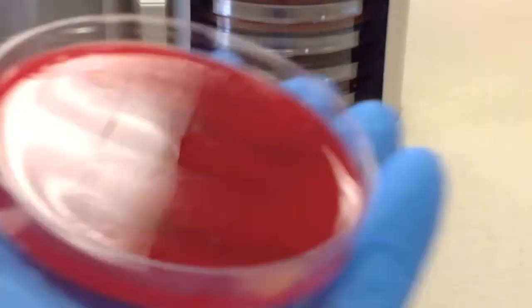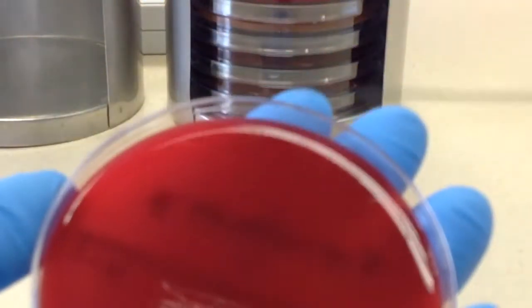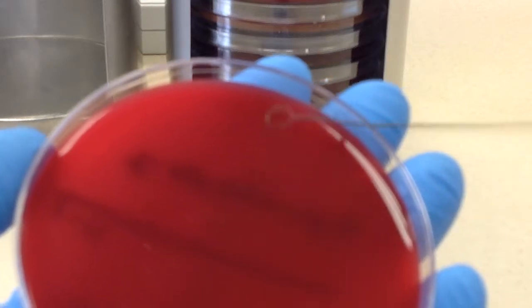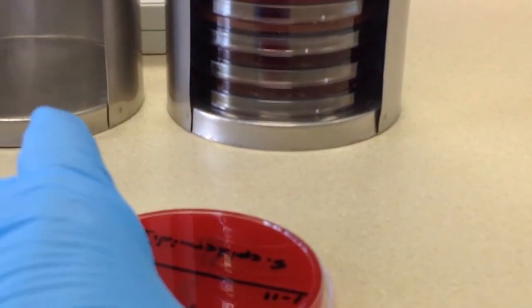Now another way you can do this, some people may use a sterile swab to pick up the organism and use that to place the organism and get it equally distributed on the plate.